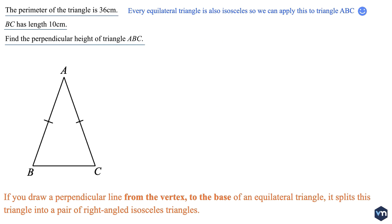In this question we're told that the perimeter of the triangle is 36 cm and that BC has length 10 cm. Now AB and AC have the same length. Therefore I may write AC equals AB equals 36 minus 10 all divided by 2, which equals 13 cm.